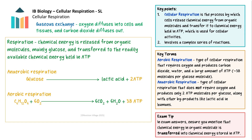In the absence of oxygen, anaerobic respiration occurs. Anaerobic respiration is the process by which chemical energy is released from glucose and transferred to ATP without using oxygen. However, its efficiency is much lower, producing a net yield of only two ATP molecules per glucose molecule. In humans, anaerobic respiration occurs when oxygen supply is insufficient, such as during intense exercise. In this process, lactic acid is produced as a by-product, which can accumulate in muscles and contribute to fatigue. Anaerobic respiration takes place entirely in the cytoplasm, whereas aerobic respiration begins in the cytoplasm but primarily occurs in the mitochondria, where most ATP is generated.